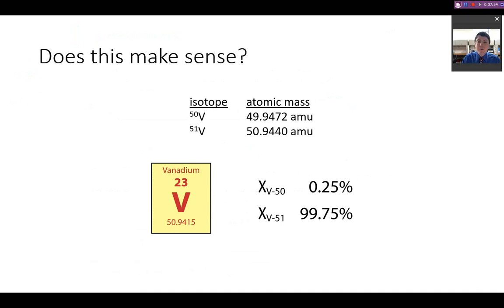Now, does this make sense? Well, take a look. The average mass is really close to vanadium-51. And so we would expect that it would take up the vast majority of the isotopic abundance.